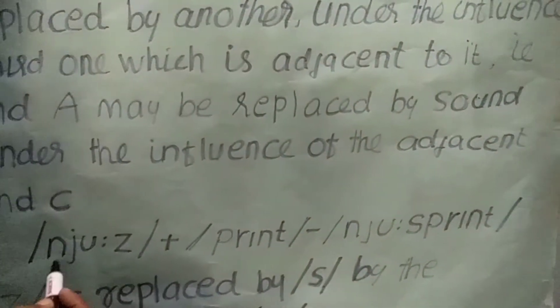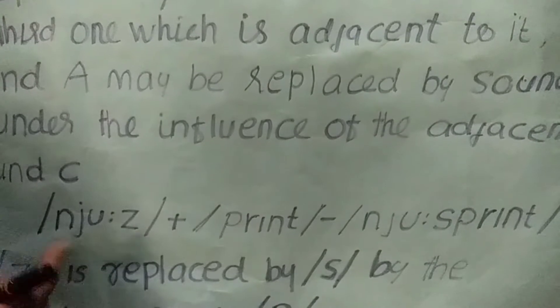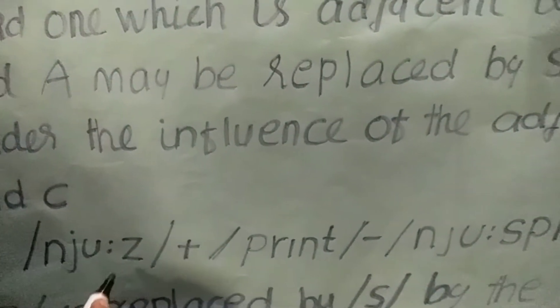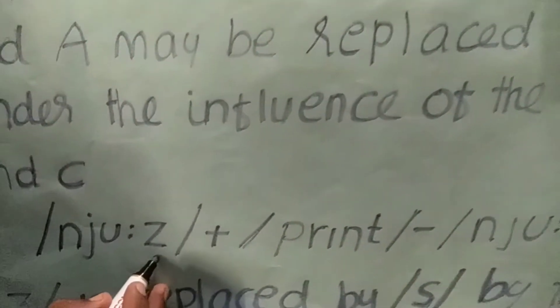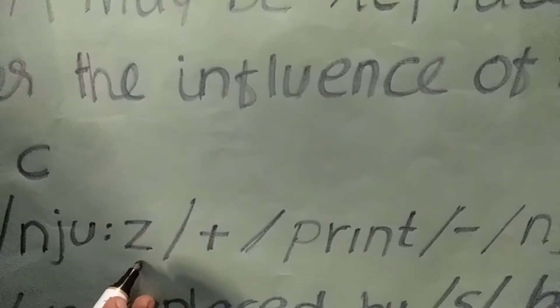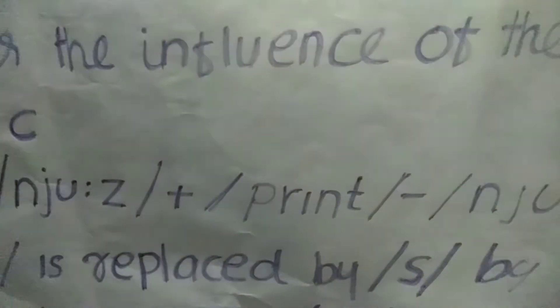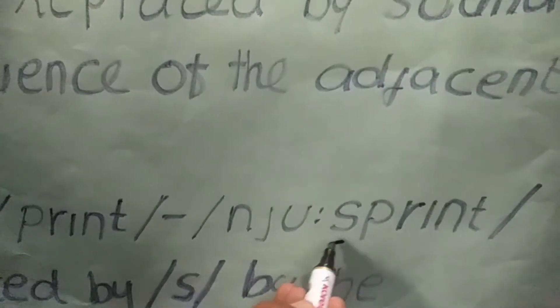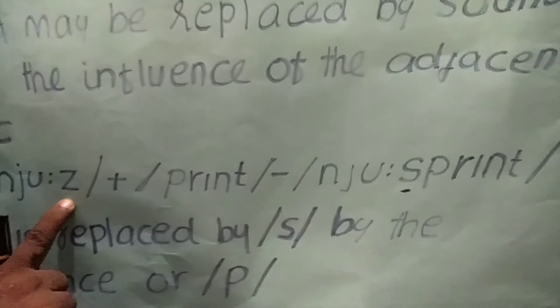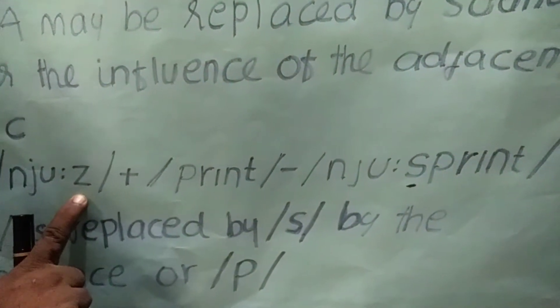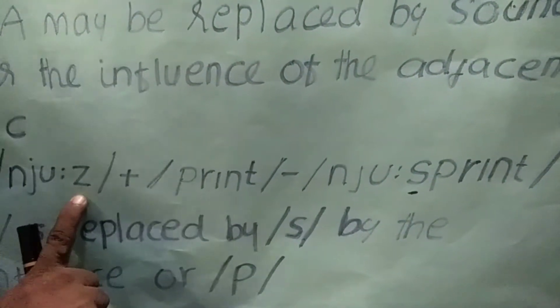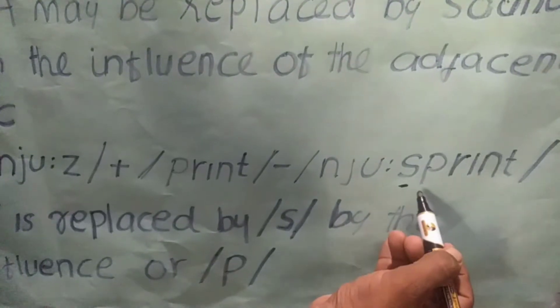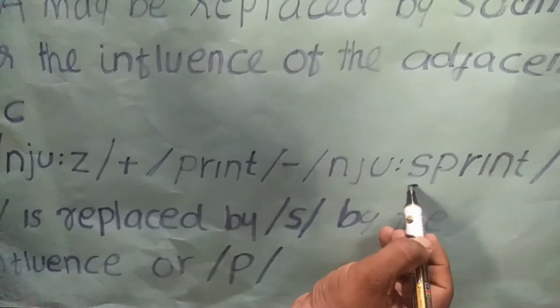Here, let's say 'newsprint.' In 'newsprint,' one sound is replaced by another — news and print combine, and under the influence of the adjacent sound, a sound is changed. That is assimilation in 'newsprint.'